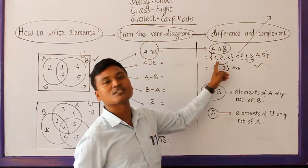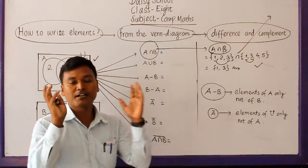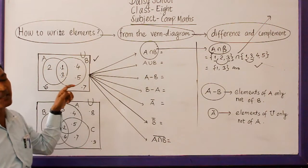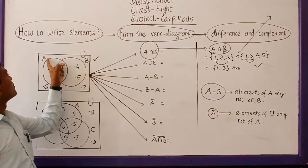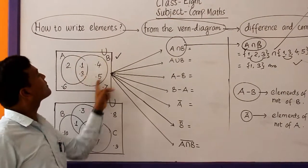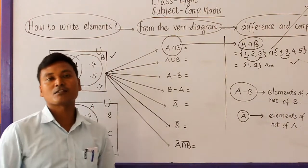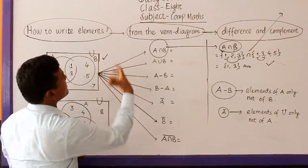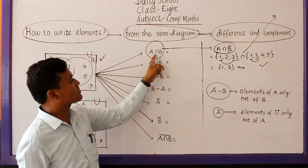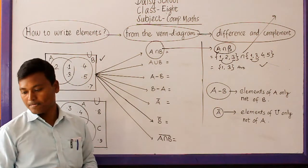You can easily write the elements of A from the given Venn diagram, elements of B from the given Venn diagram. Elements of A are the elements which lie inside A. The elements which lie inside B are the elements of B. But today, we are going to read how to write the elements of given set operation — that may be related to intersection, union, difference, complement — directly from the given Venn diagram.